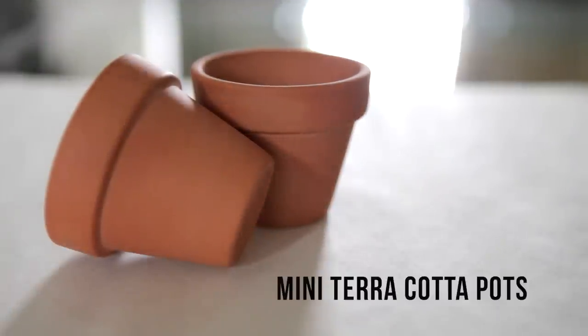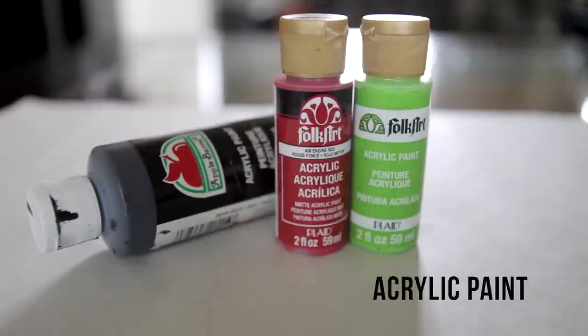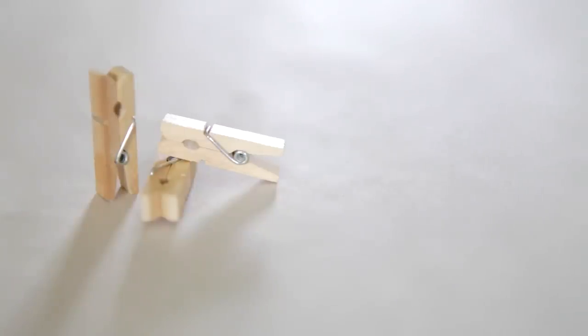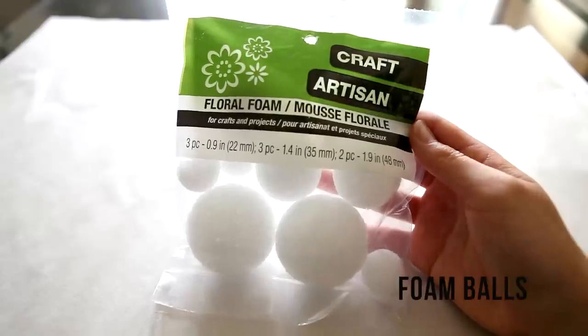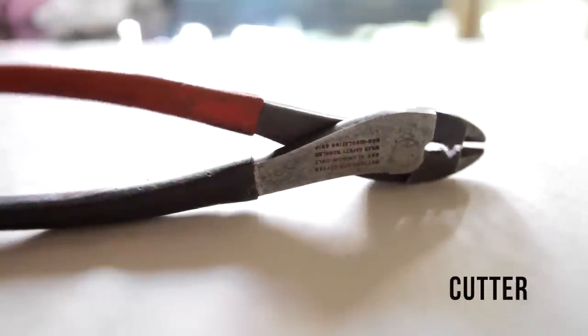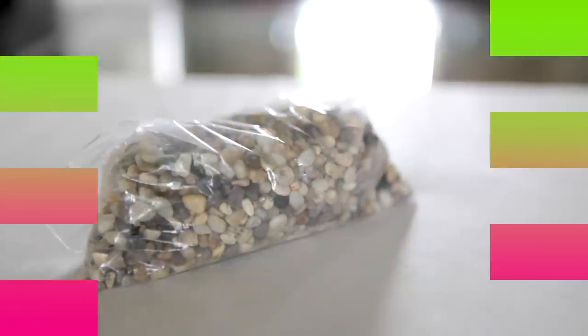The first thing that we'll be needing is some mini terracotta pots which you can find at any craft store or dollar store and they're super inexpensive so that's great. We're also going to need some acrylic paint, some paint brushes, some mini clothespins which I purchased at Walmart, some bamboo skewers, some foam balls or floral foam. We'll also need a hot glue gun, a cutter, and last but not least some aquarium rocks. So once you've got all your materials, let's get started.